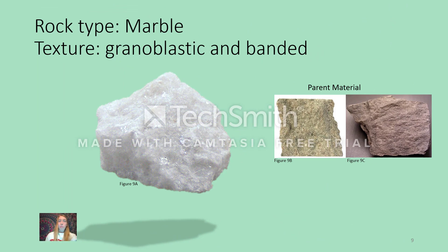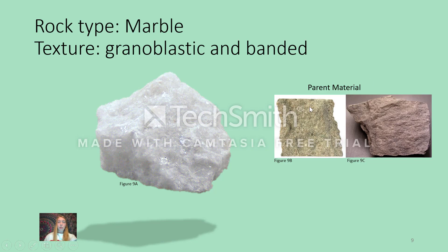Marble is a metamorphic limestone or dolostone comprised mainly of calcite and dolomite. The texture is granoblastic because the grains have no orientation — they're random — and also banded. When marble is cut, you can see really pretty banded patterns, which makes it very popular for decorative work. Often, because of the way it forms, you'll get something like schist mixed in with it, which creates the banding.